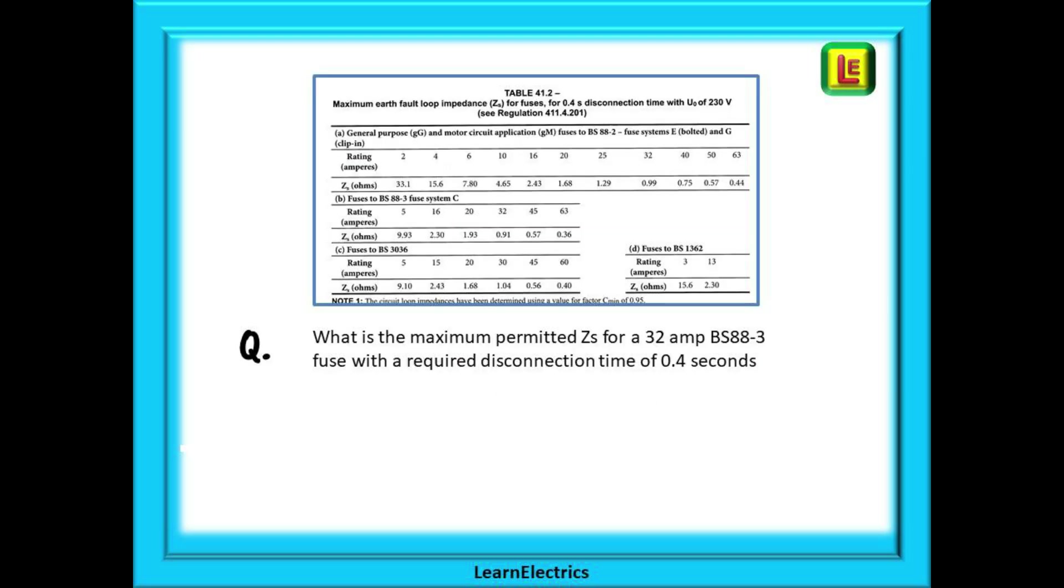If a question asked: what is the maximum permitted ZS for a 32 amp BS 88-3 fuse with the required disconnection time of 0.4 seconds? The information in the question guides us to Table 41.2. Find BS 88-3 fuses. Find 32 amps. And just below 32 is the answer we seek. ZS should not exceed 0.91 ohms. Easy if you follow the method.